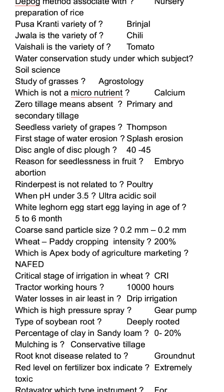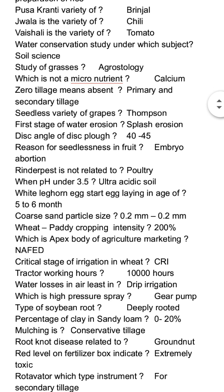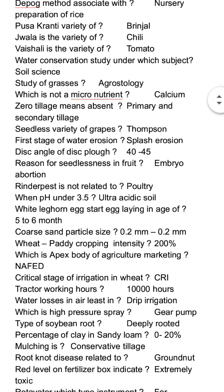The wheat-paddy cropping system intensity is 200 percent. The apex body of the agriculture market is NAFED. The critical stage of irrigation in wheat is the CRI (Crown Root Initiation) stage. Tractor working hours are 10,000 hours. Water loss is least in drip irrigation, which mostly conserves water.